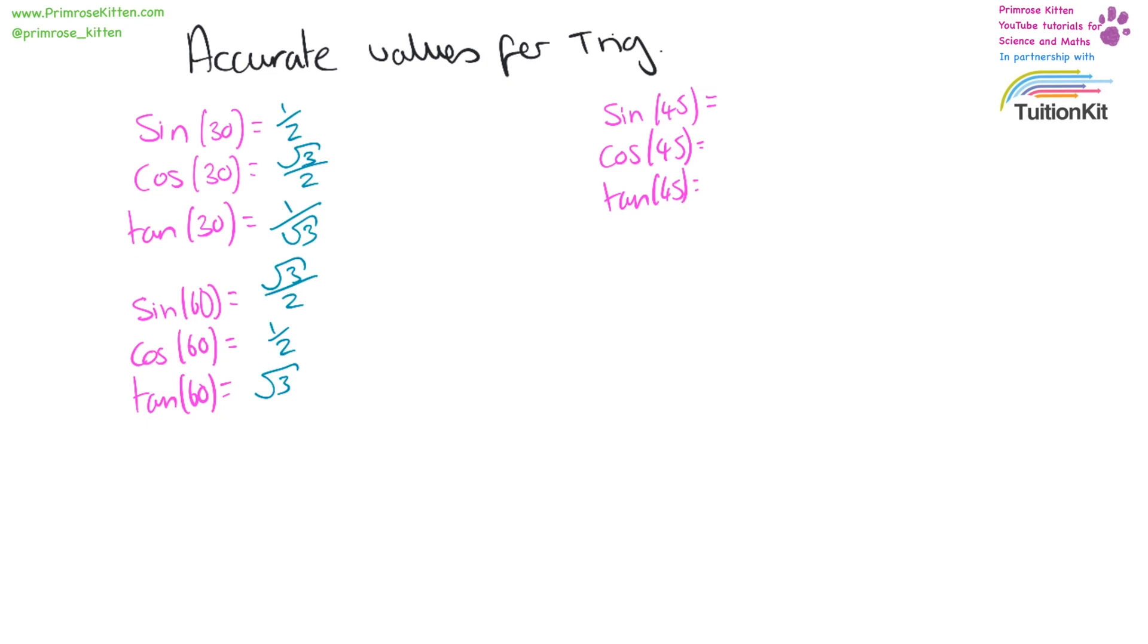Sine 45 is one over square root of two, cos 45 is also one over square root of two, and tan 45 is one.